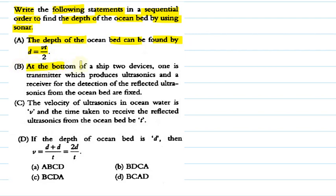Statement B: at the bottom of a ship, two devices — one is a transmitter which produces ultrasonics, and a receiver for the detection of reflected ultrasonics from the ocean bed — are fixed. Statement C: the velocity of ultrasonics in ocean water is V, and the time taken to receive the reflected ultrasonics from the ocean bed be T.